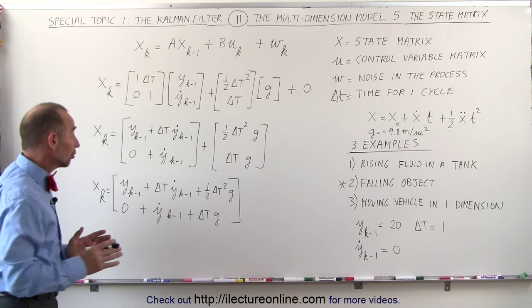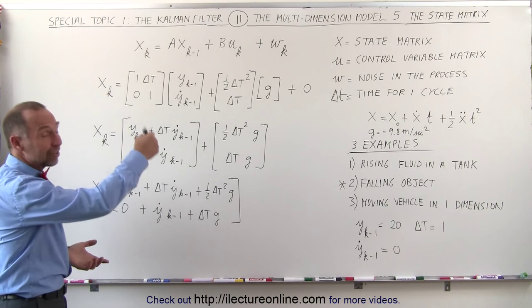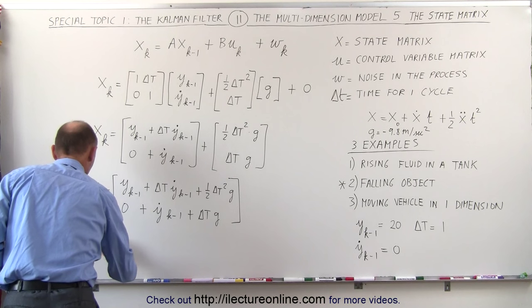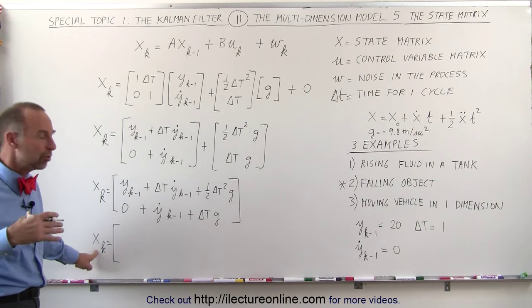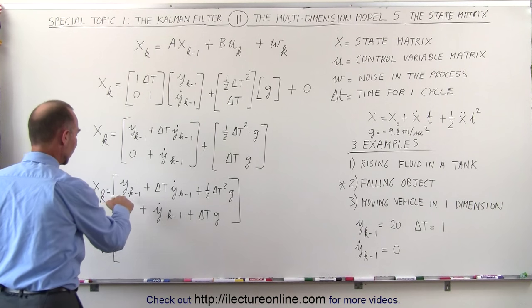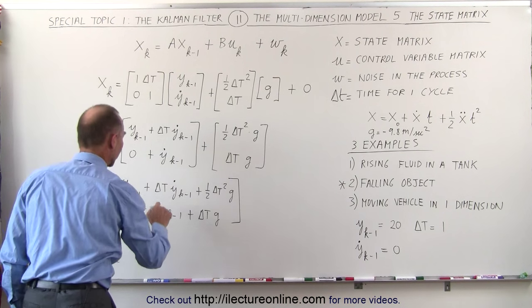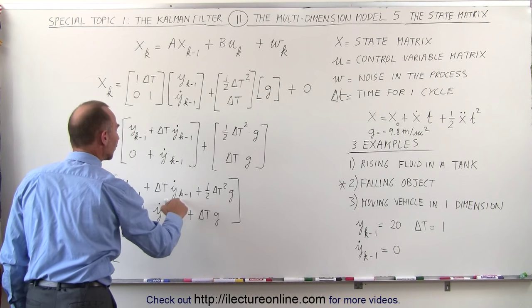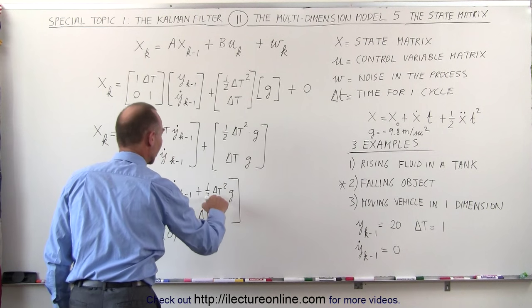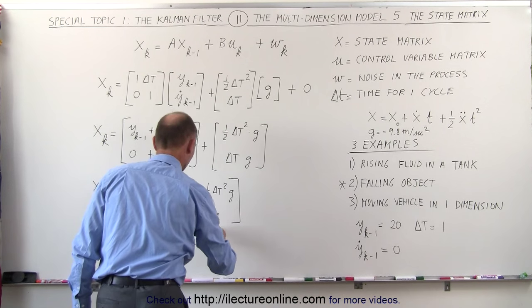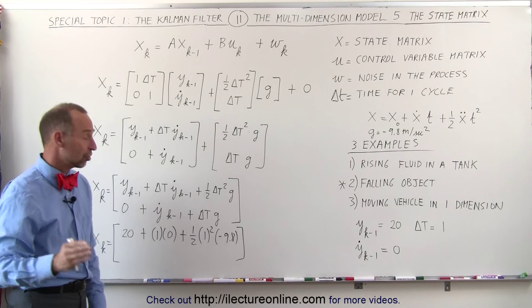Now let's plug in some numbers to see what this actually looks like. We should be able to find the new position and new velocity of the falling object we're tracking. x sub k, one second later since delta T equals one second, gives us: the previous position is 20 meters, we add one second times the previous velocity which is zero, plus one-half times delta T squared — delta T is one, so one squared — times the acceleration of gravity, minus 9.8. This added together gives us the new position one second later.